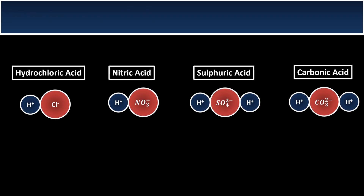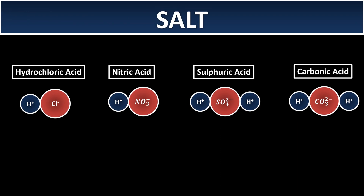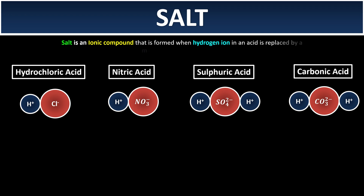So what is salt? Salt is an ionic compound that is formed when the hydrogen ion in the acid is replaced by either a metal ion or an ammonium ion.